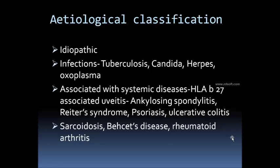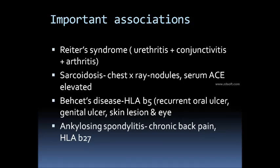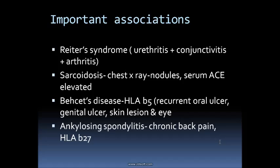Other important associations with uveitis include sarcoidosis, Behcet's disease, and rheumatoid arthritis. Reiter's syndrome — which includes urethritis, conjunctivitis, and arthritis — is an important exam topic. For sarcoidosis, examiners may give features of uveitis along with a chest X-ray showing nodules and elevated serum angiotensin-converting enzyme levels.